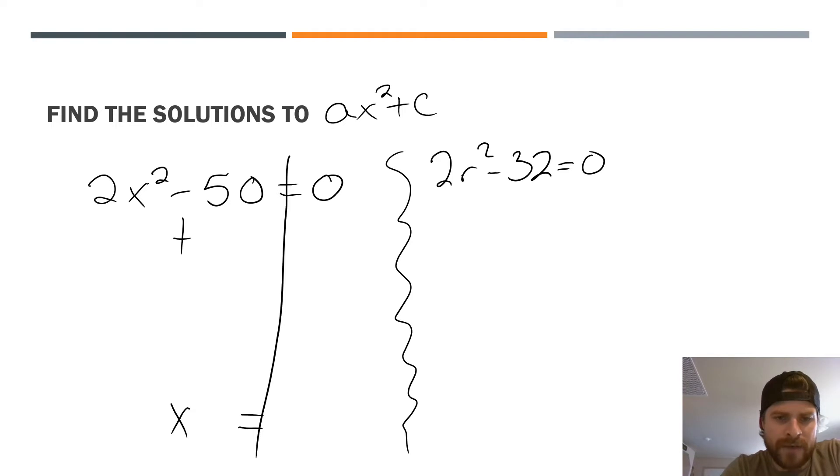So step one, inverse operation of negative 50 is positive 50. That would cancel that out. Now if I do it to the left side, I've got to add 50 to the right side, leaving me with 2x² = 50. I then need to get rid of the coefficient of 2, so I'm going to divide by 2, and I move all the way down to x² = 25.